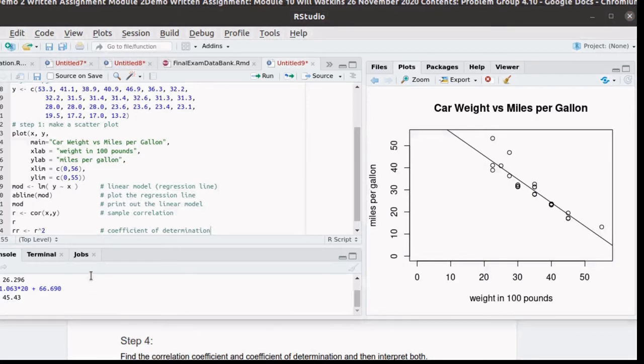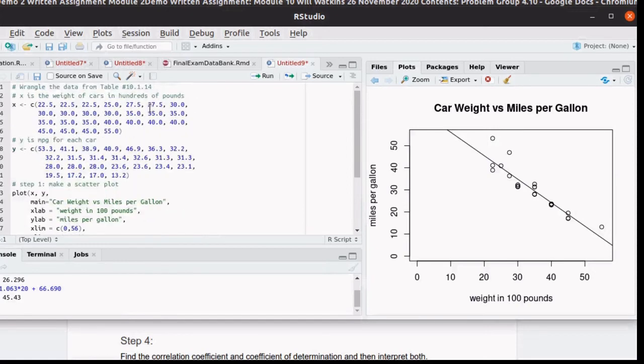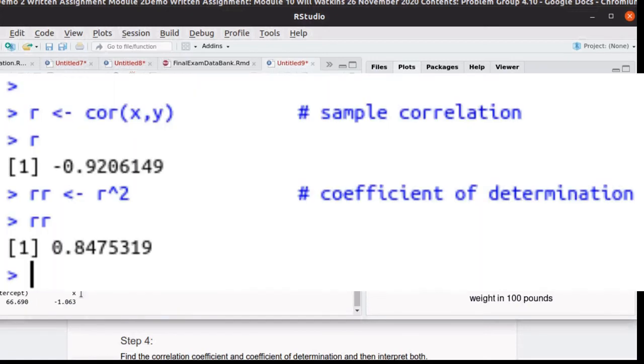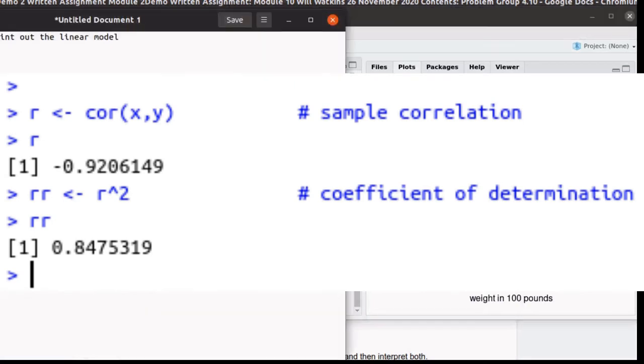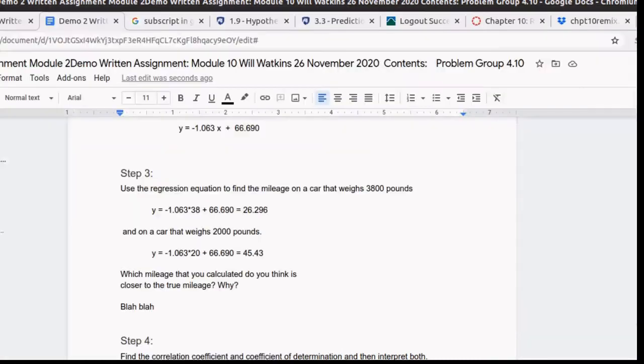rr happens to be the coefficient of determination, r squared. And of course, we want to shout that out as well. So let's run that script now. And we're getting this piece of information.